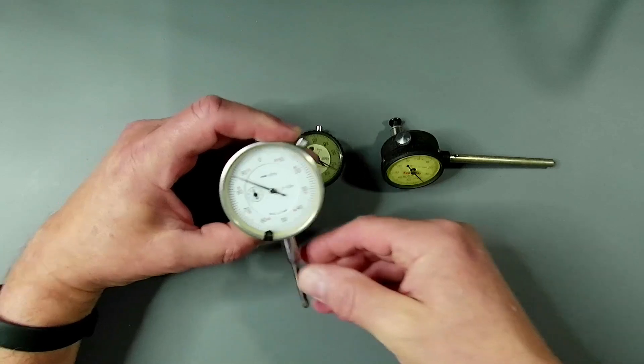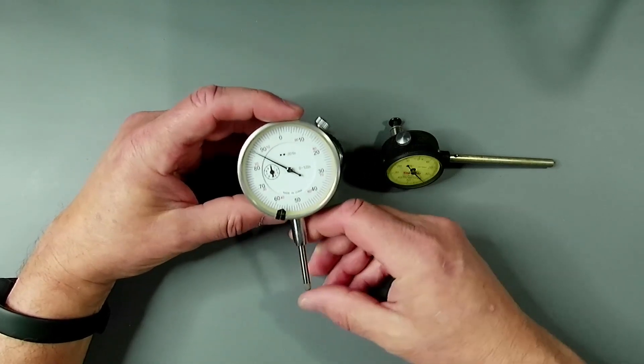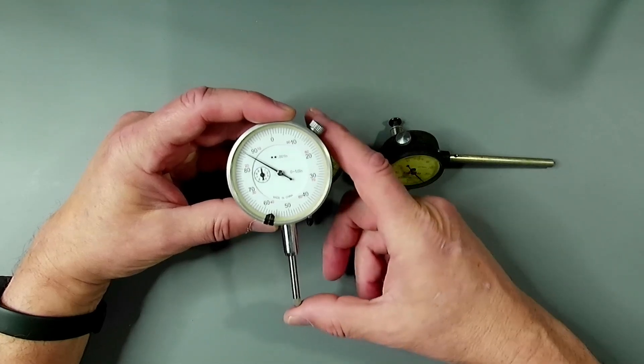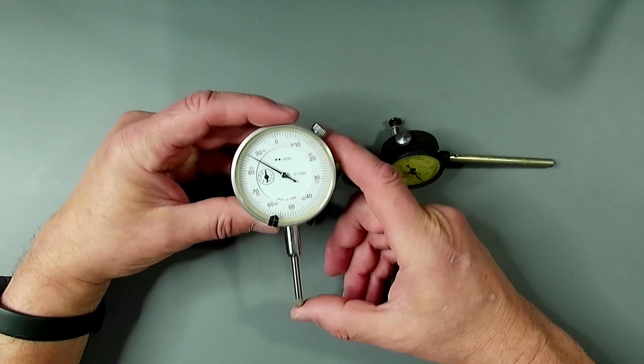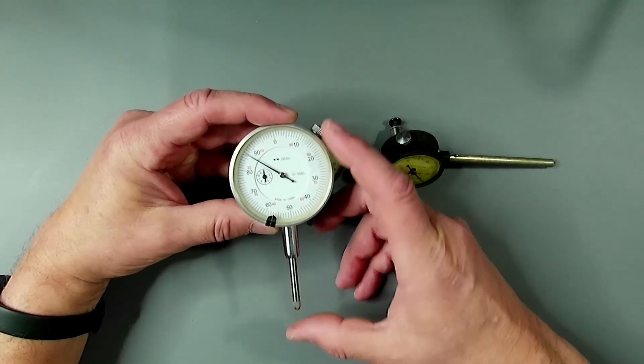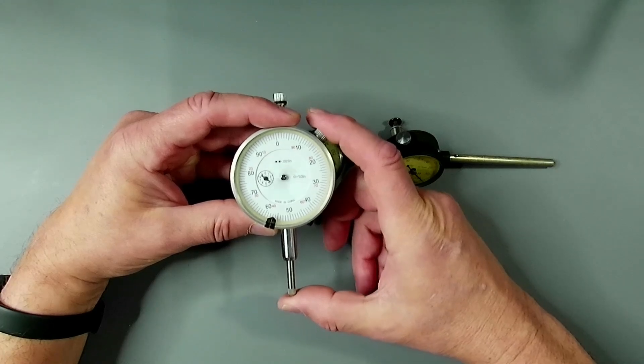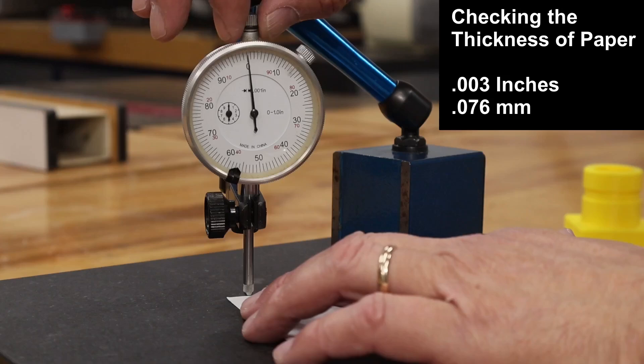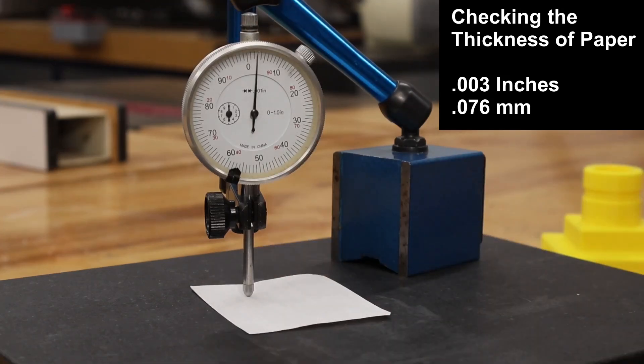Dial indicators, as their name implies, have a dial with graduations that allow for accurate measurement of tiny details. Through gearing, it can show you a man-readable value representing a very small distance. For example, you can barely see the thickness of a piece of paper, yet with a dial indicator, you can easily measure that thickness with the naked eye. Think of it as a visual distance amplifier.